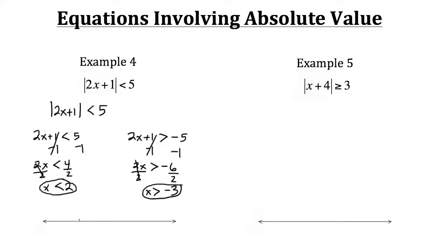So we have negative 3 and positive 2. Now x is greater than negative 3, so it's not going to equal negative 3, and it's less than 2, so it's not going to equal 2 either. That means x can be any value in between negative 3 and 2.